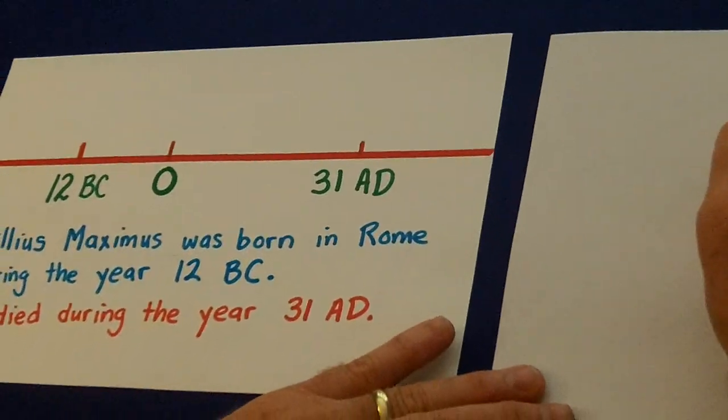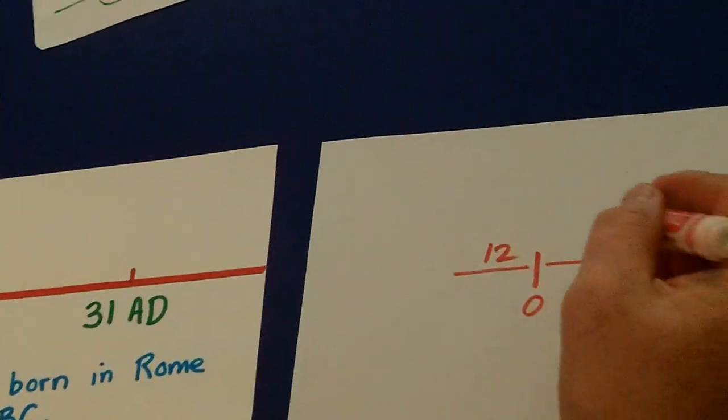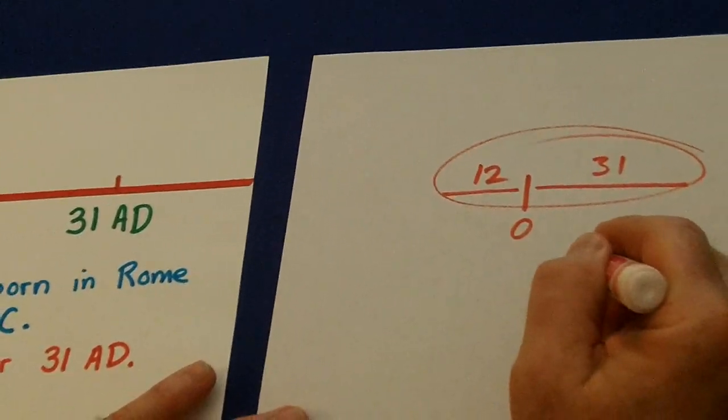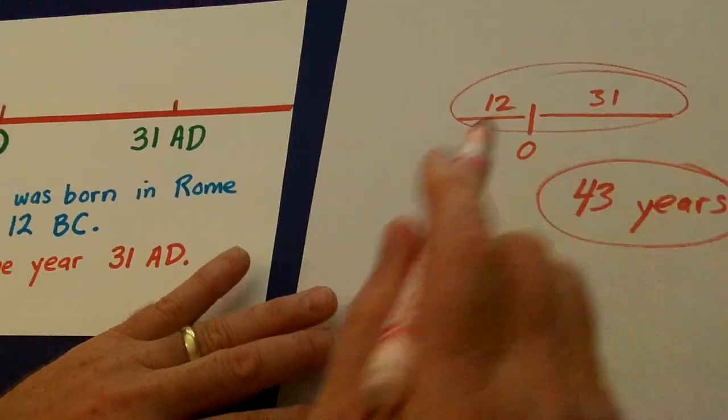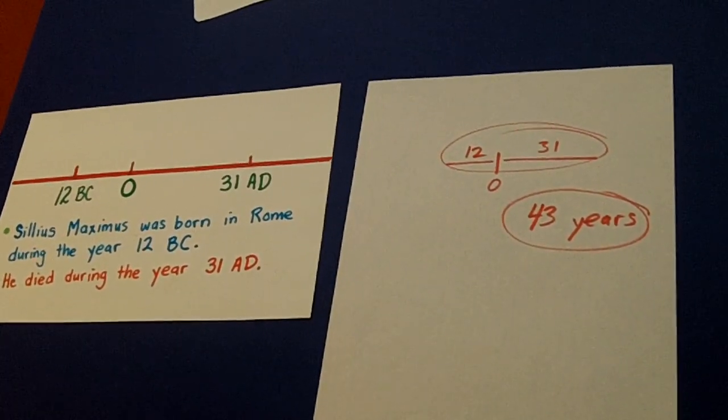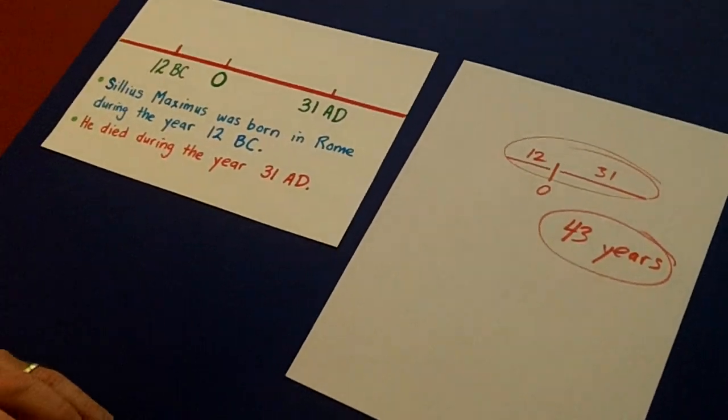Once again, here's zero. He lived 12 years before zero, 31 years after zero. You add those two up, 12 and 31, he lived 43 years. So he was 43 years old when he died during the year 31 AD. And those are our concrete situations.